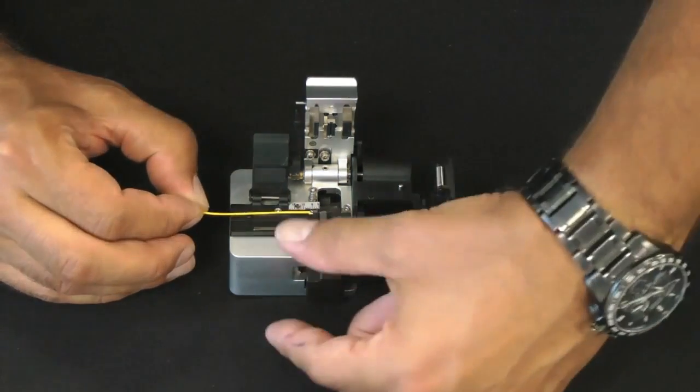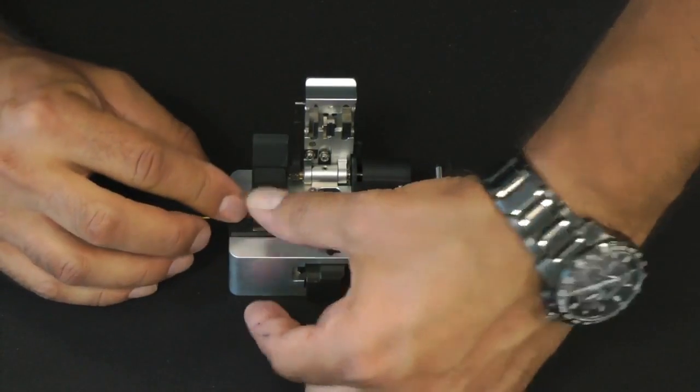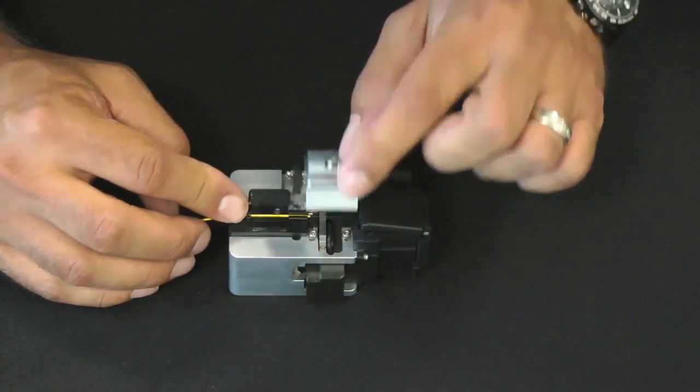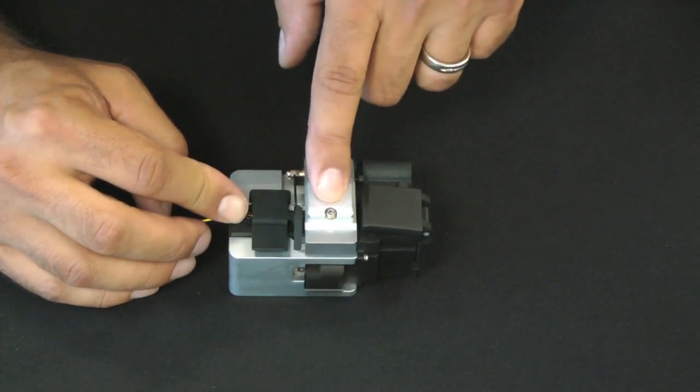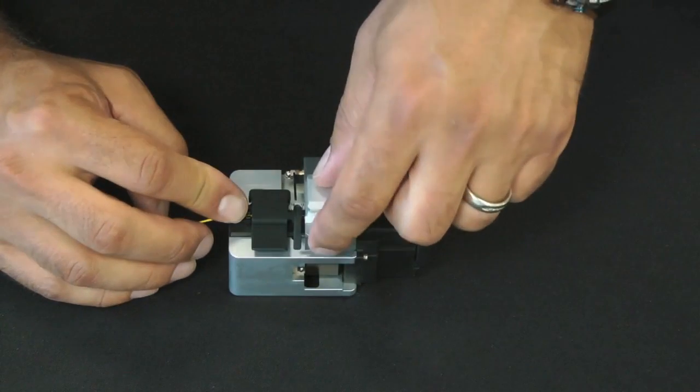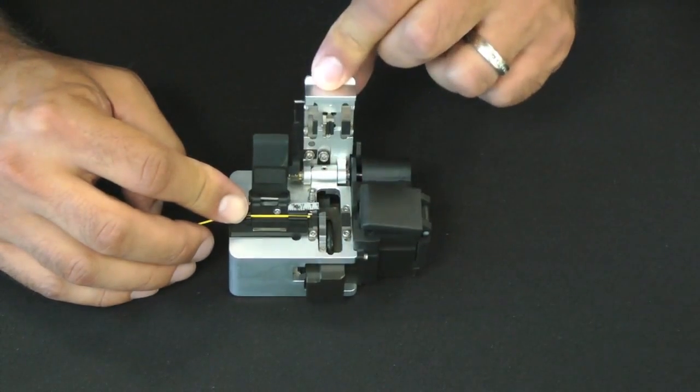Using your finger to hold the fiber in place, close the debris cover and the main cover of the cleaver. The fiber is now immobilized in the cleaver. Press down on the main cover to activate the cleaver. After the cleave process is complete, open the main cover.